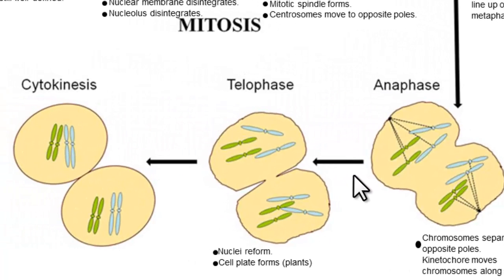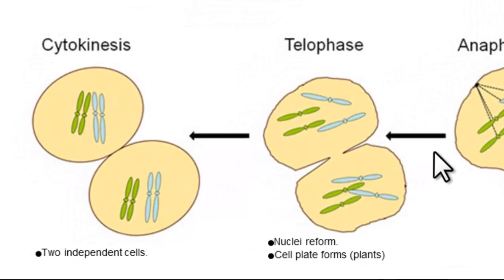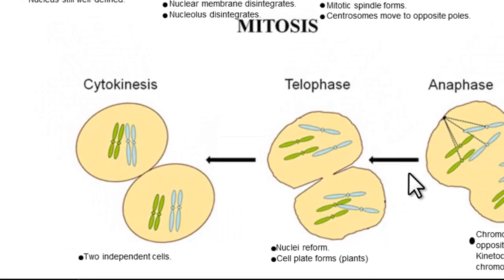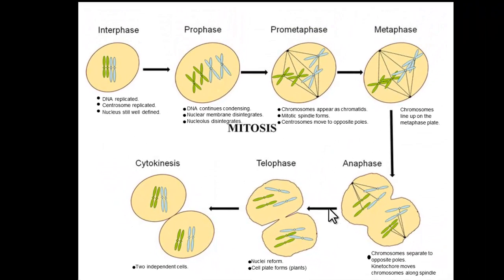The next stage is telophase, and that's where separate cells are actually forming. The nuclei start to reform and the cell really starts to divide. Cytokinesis is the process where we have that cleavage of the cells and we actually get two separately functional cells. So we've gone through our process of IPMAT: interphase, prophase, metaphase, anaphase, and telophase. And that's our process of mitosis.